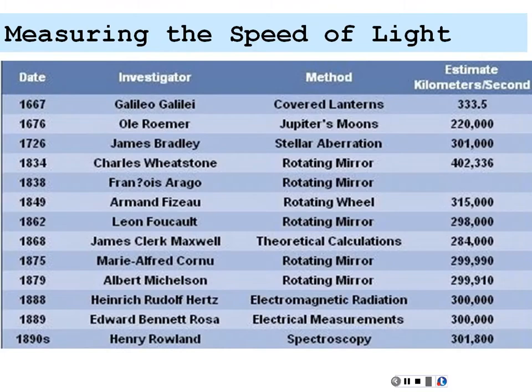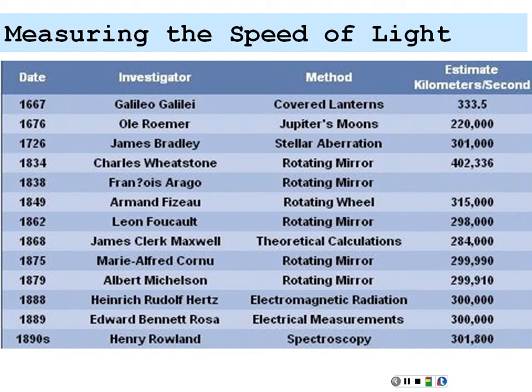Here's a list of many of the measurements of the speed of light. First, Galileo Galilei with 3 times 10 to the 5 meters per second, or 333 kilometers per second — an excellent start. Then Ole Rømer came up with a better measurement. James Bradley, based on stellar aberration. The rotating mirror and rotating wheel of Fizeau and Foucault. James Clerk Maxwell's theoretical calculations in 1868 came up with a value very close to 3 times 10 to the 8 — about 284,000 kilometers per second. Then Michelson and Morley with a rotating mirror, all zeroing in on the final value of 3 times 10 to the 8 meters per second.